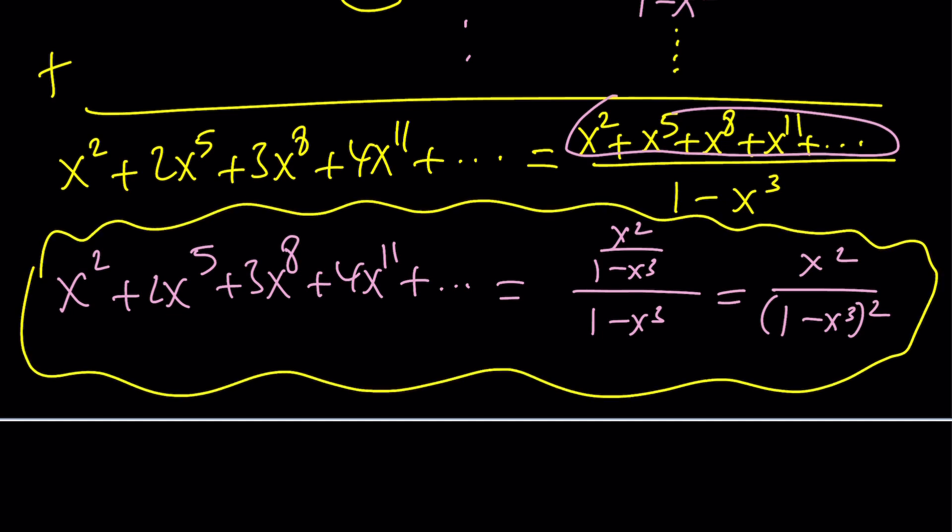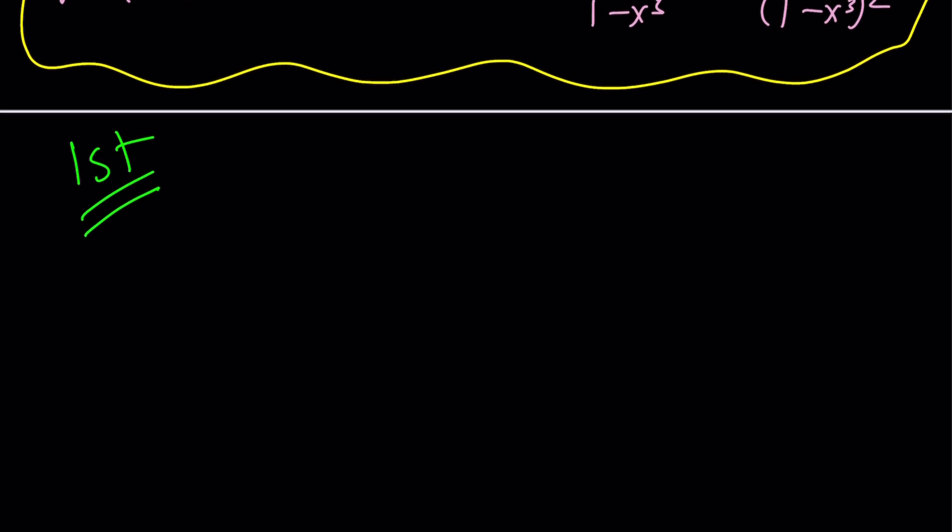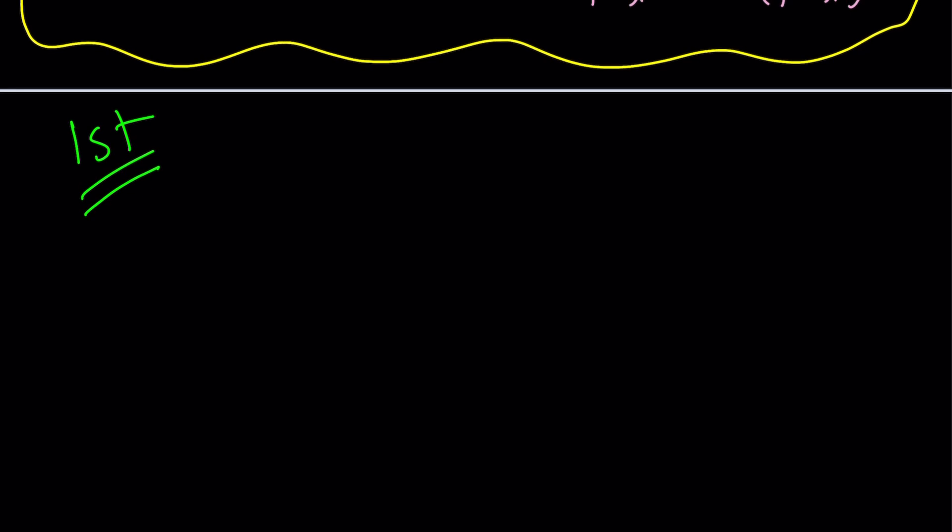This was just the first method. So stick around because we're about to start the second method. Wait a minute. Wasn't this the second? Sorry about that. I got confused. This was the second method. And now we're going to take a look at the first method. Because we did the second method first. Does that make it the first method? No. Now let's go ahead and do the first method.